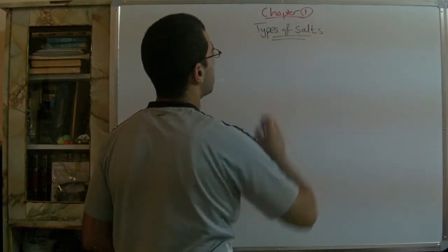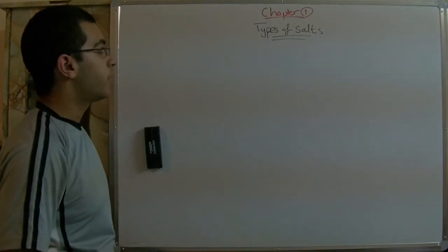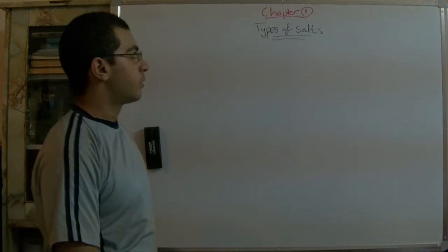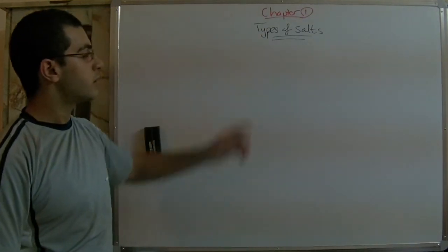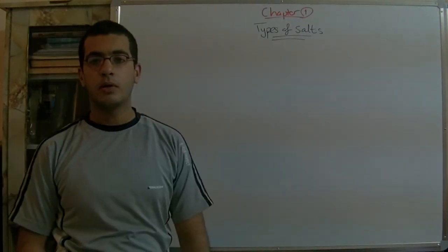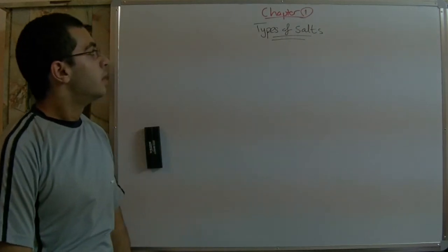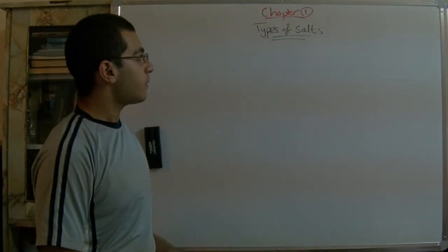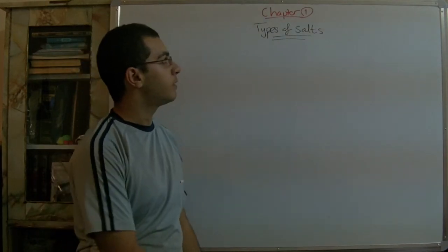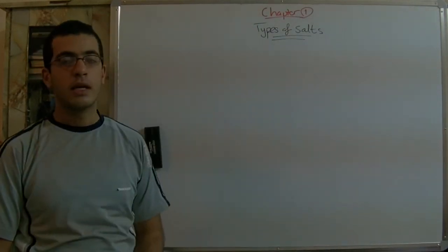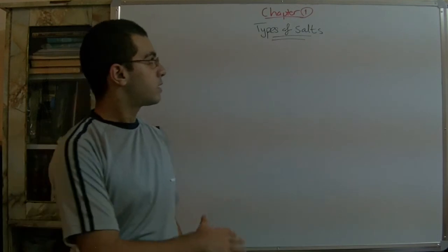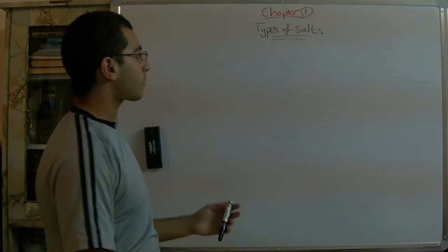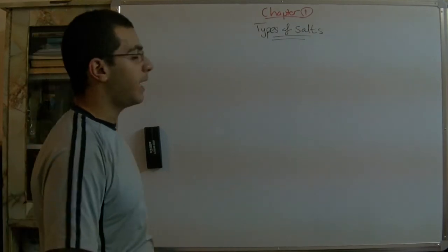First, we will learn the types of salts which the plant needs in order to continue its growth. These salts are very important for the growth of the plant. When scientists stopped providing the plant with these types of salts, the growth of the plant stopped and the plant may have died.